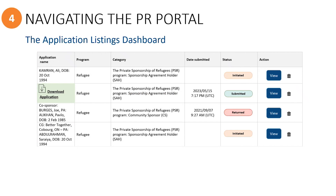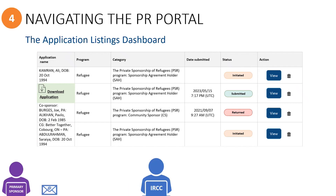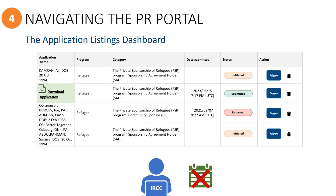A red status bar will indicate that an application has been returned, and an automated generic email notification will be sent by the PR Portal to the primary sponsor. However, the Resettlement Operations Centre in Ottawa, also known as ROCCO, will also send a follow-up email to the primary sponsor with specific details about what may be missing in the application. Sponsors will not have a specific timeframe in which they need to fix the application and resubmit.